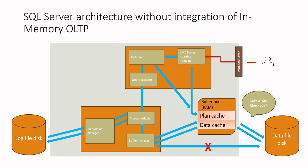First of all, let's discuss the high-level SQL Server architecture without in-memory OLTP technology, which is illustrated here. For example, when a client makes a select query request, the query is passed to the CMD parser, where it is parsed and binded. After this process, the query is passed to the optimizer if there is no query plan in the cache. This query plan is then passed to the query executor and access methods. Access methods connect to the buffer manager that will bring data from the buffer pool. The extracted data is then passed back to the client.